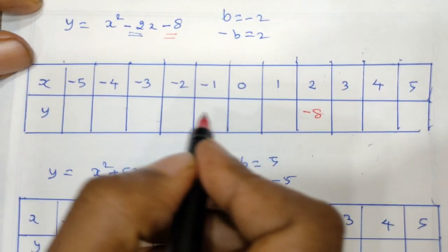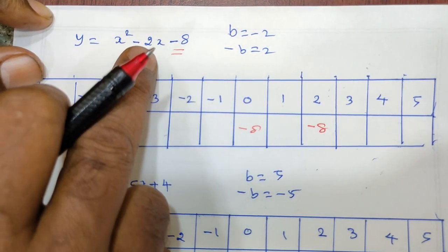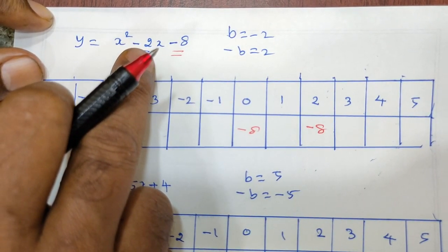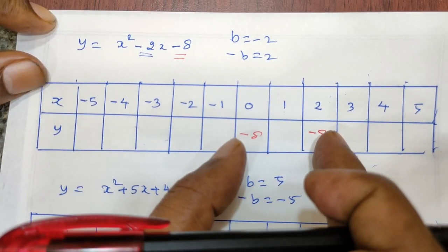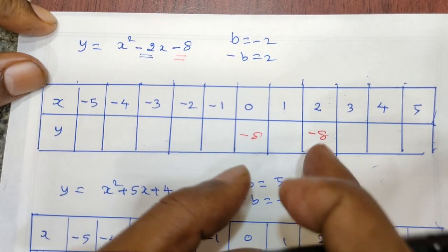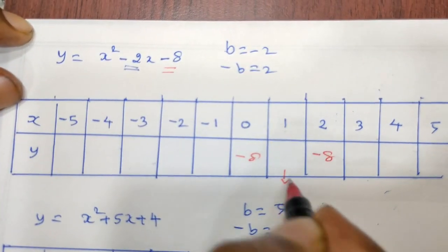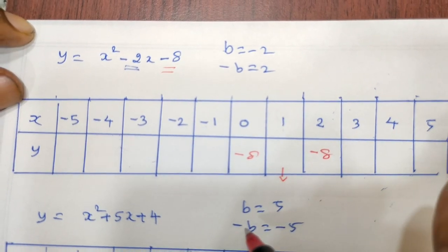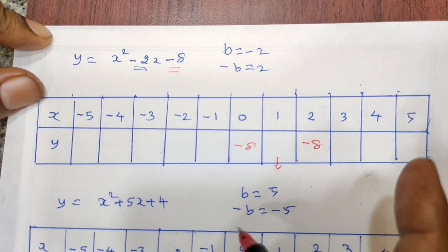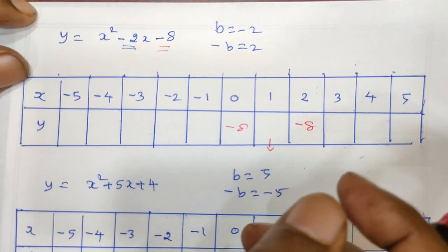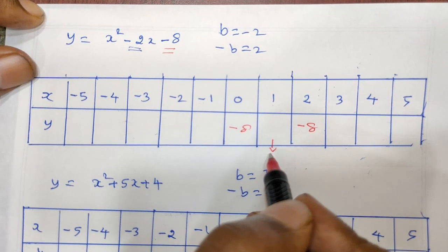It is 0. It is the constant term. If you have minus 2, then what is negative? Plus 2. 2 equals minus 2. Then what is the middle term? These two are the middle term. Now let's start.